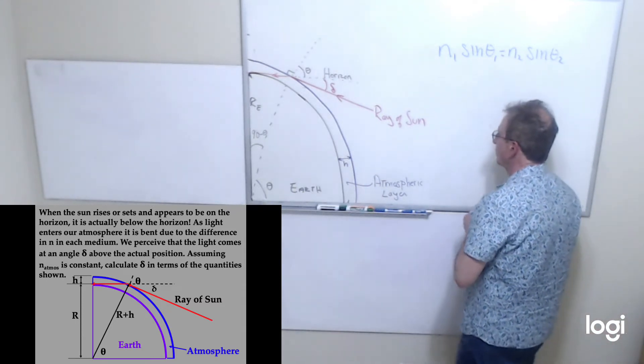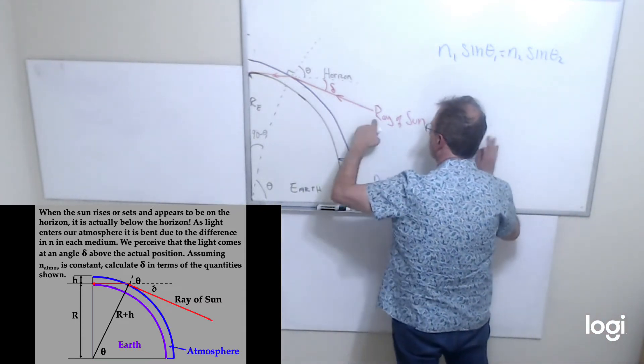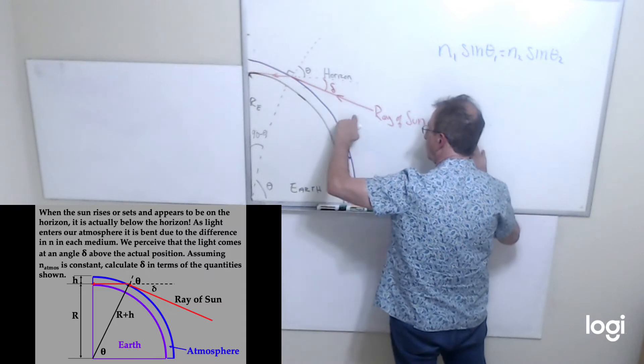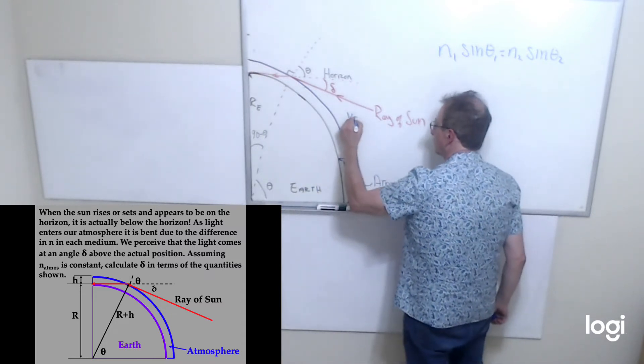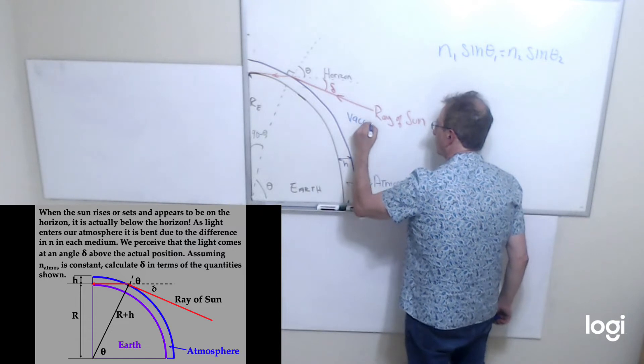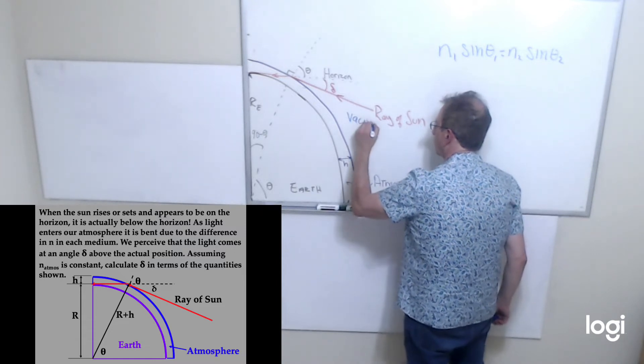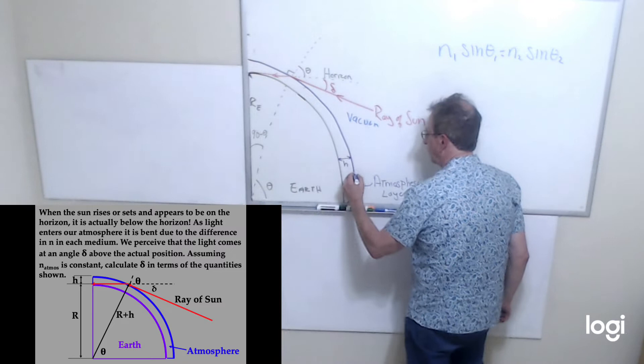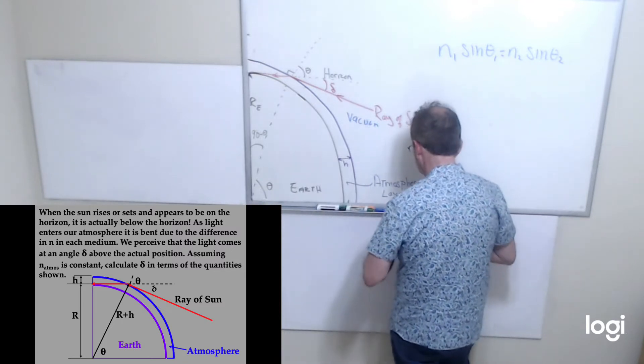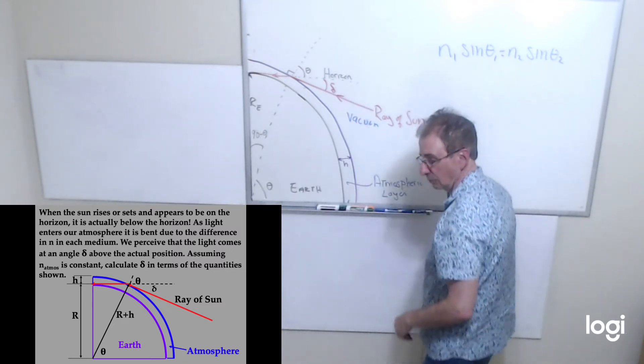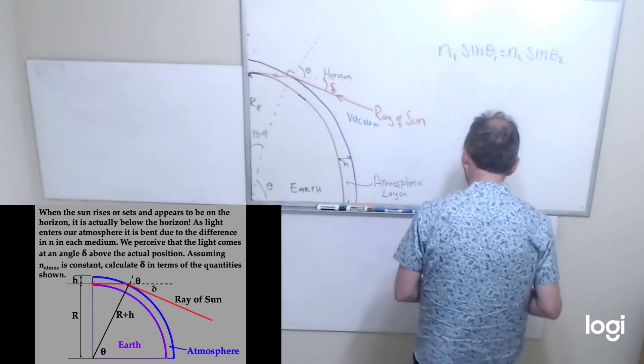In this example, we have a ray of sun, a ray of sunlight, traveling. Here's a vacuum. And here the index of refraction in this medium, we're going to call it n_atmosphere.